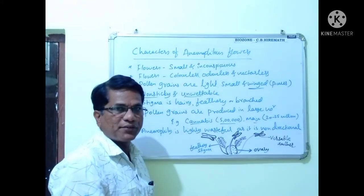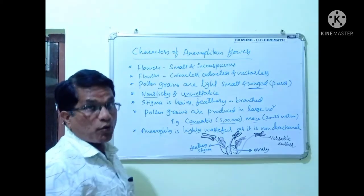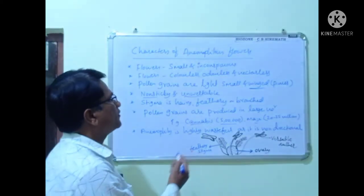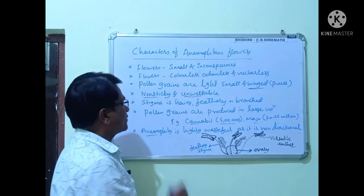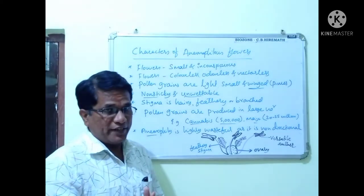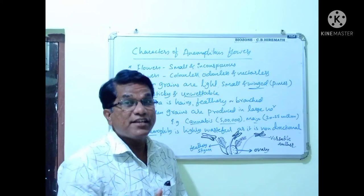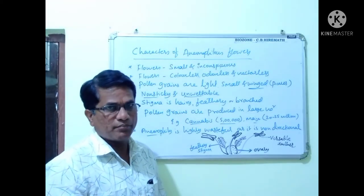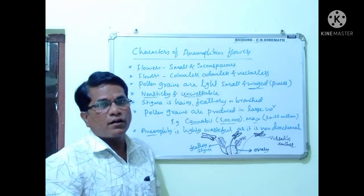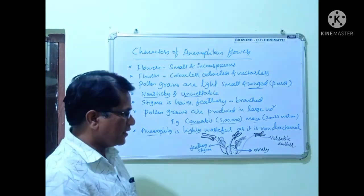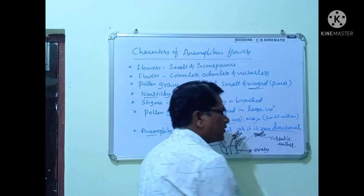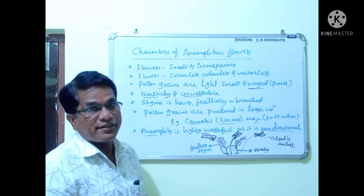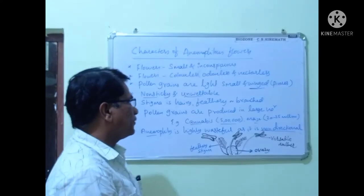Anemophily is a highly wasteful process because it is non-directional, means the number of pollen grains are wasted. The reason is non-directional - the anemophily is non-directional, so that's why number of pollen grains get wasted.